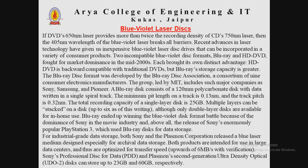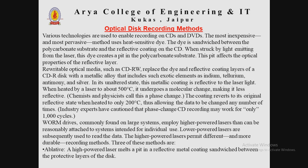Various technologies are used to enable recording on CDs and DVDs. The most inexpensive and pervasive method uses a heat-sensitive dye. The dye is sandwiched between the polycarbonate substrate and the reflective coating on the CD. When struck by light from the laser, this dye creates a pit in the polycarbonate substrate, which affects the optical properties of the reflective layer. Rewritable optical media such as CDRW replaces the dye and reflective coating layers of a CDR disk with a metallic alloy that includes elements such as indium, tellurium, antimony, and silver.